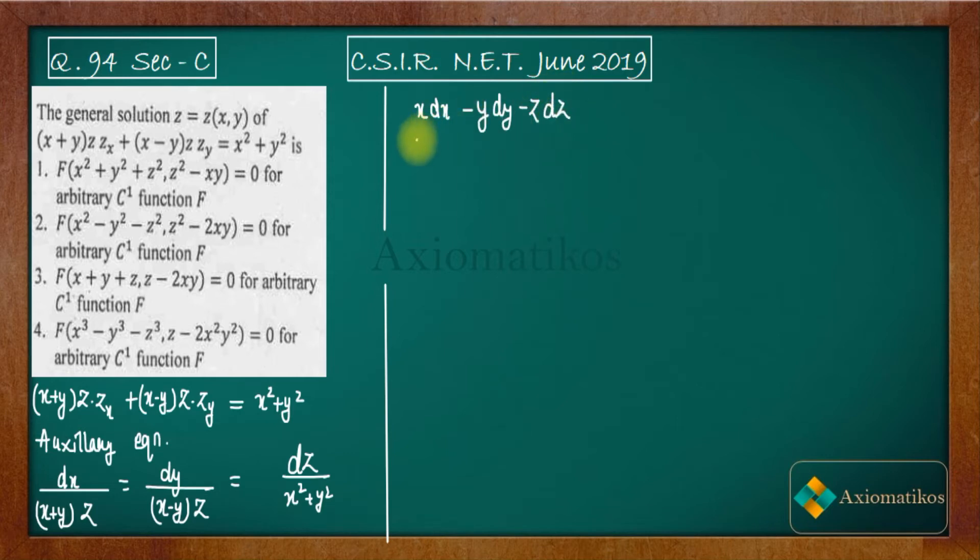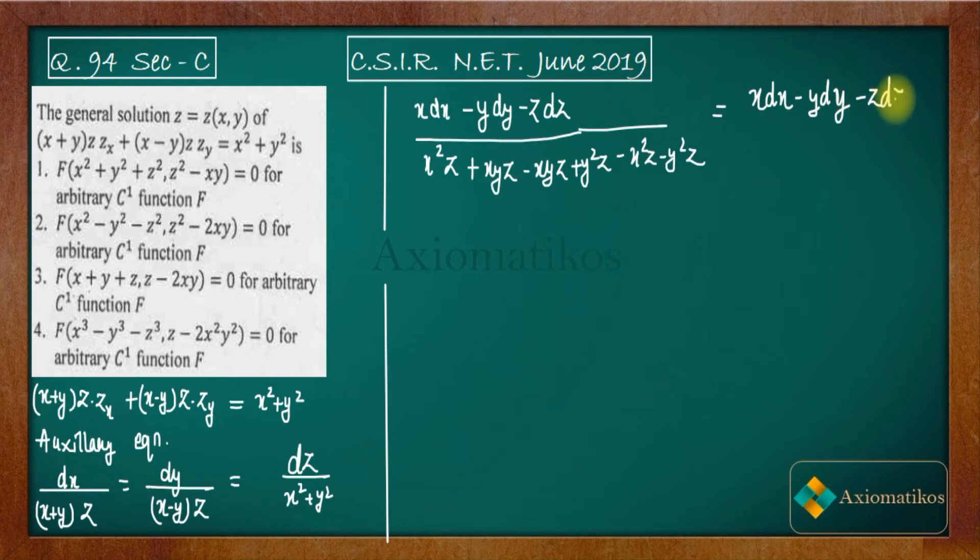So on the denominator part, what we will get is x²z + xyz - xyz + y²z - x²z - y²z. The benefit of multiplying and dividing by x, -y, -z is that on the denominator you are going to have zero. This makes it easy to integrate.